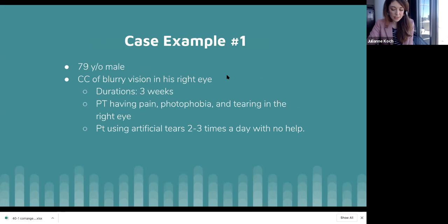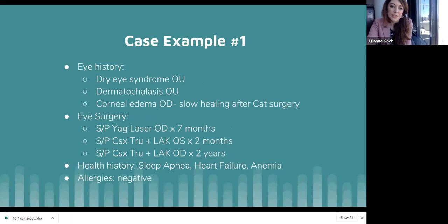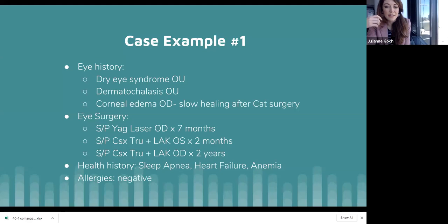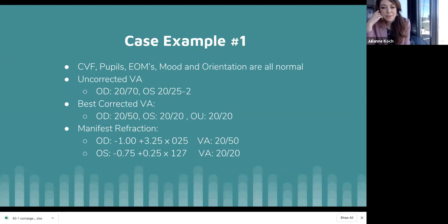Case 1: A 79-year-old male with blurry vision in the right eye for three weeks, pain, photophobia, and tearing. He's been using artificial tears two to three times a day with no improvement. He has a history of dry eye syndrome, blepharitis in both eyes, corneal edema in the right eye, was slow to heal after cataract surgery, had a YAG laser seven months ago, and cataract surgery in the left eye two months ago. Medical history includes sleep apnea, heart failure, and anemia. Best corrected vision is 20/50 right eye and 20/20 left eye.